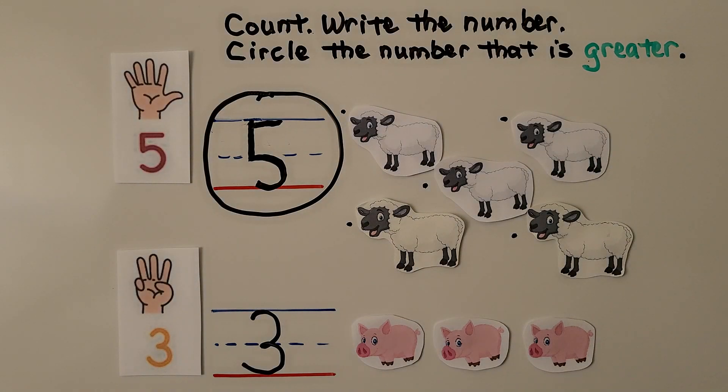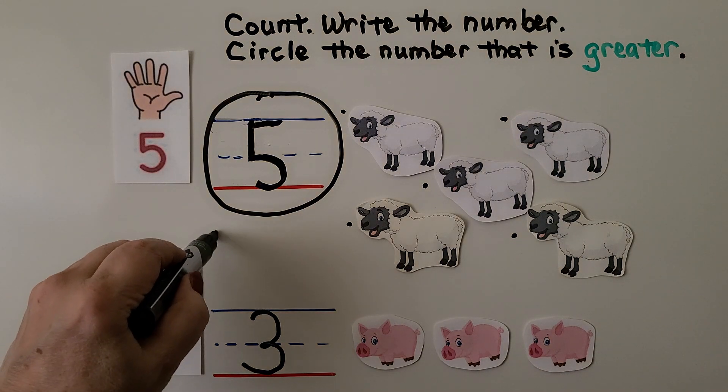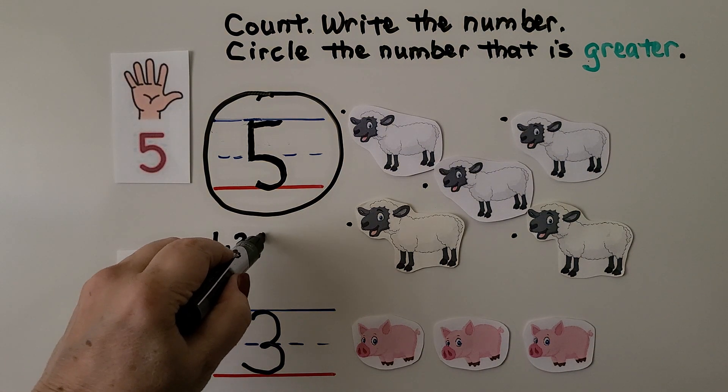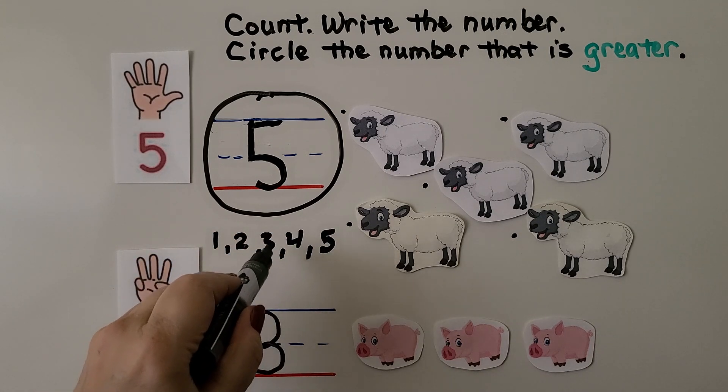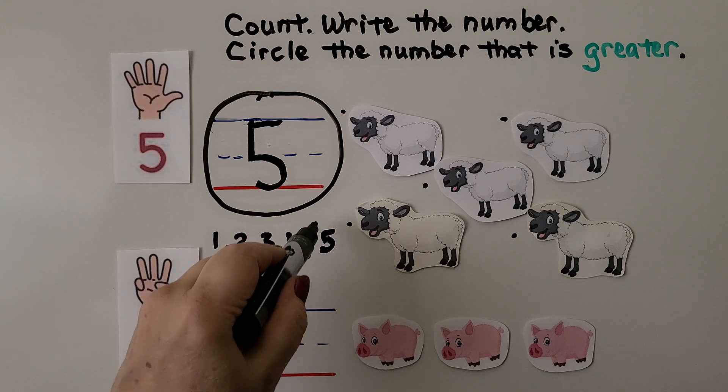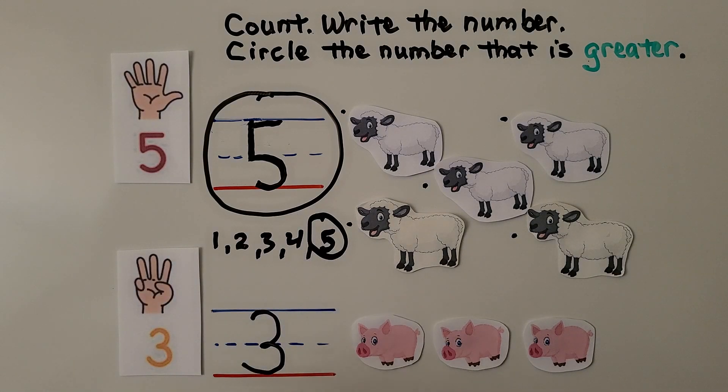We also know that 5 is the greater number because it comes later in counting order. When we write 1, 2, 3, 4, 5. Here's the 3. 5 comes later in counting order. It's the greater number.